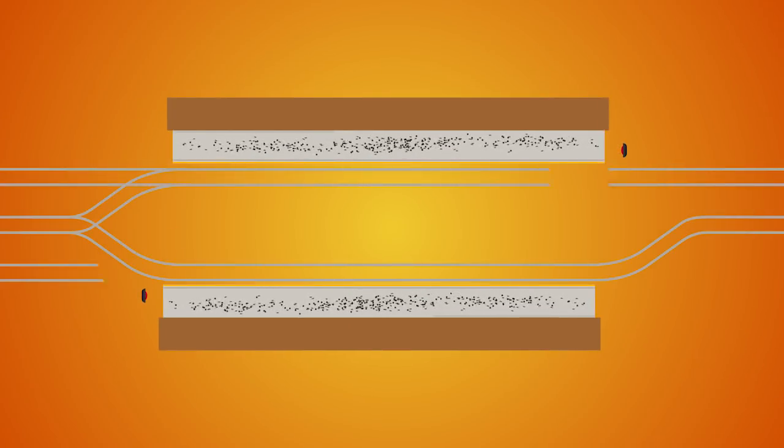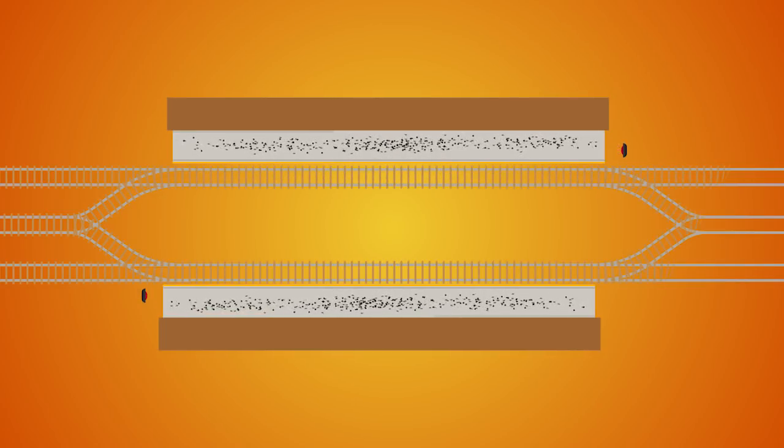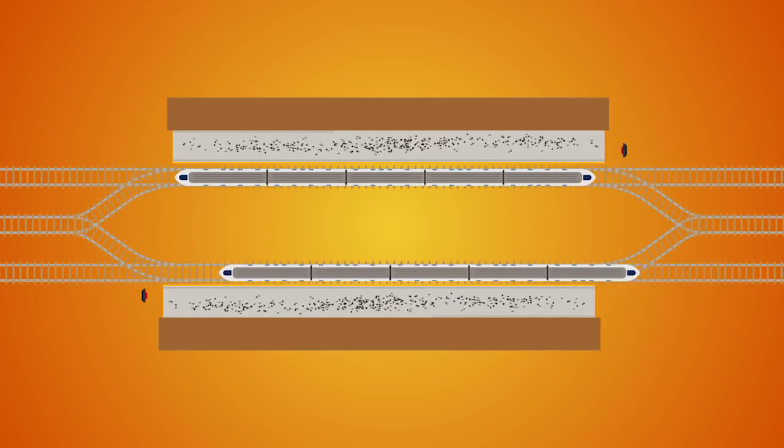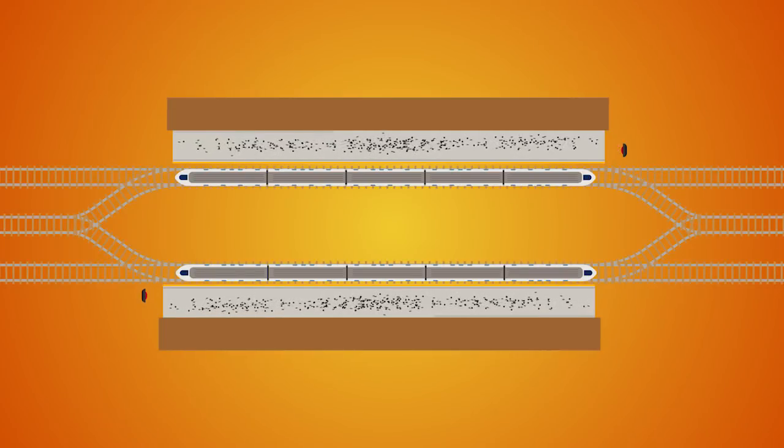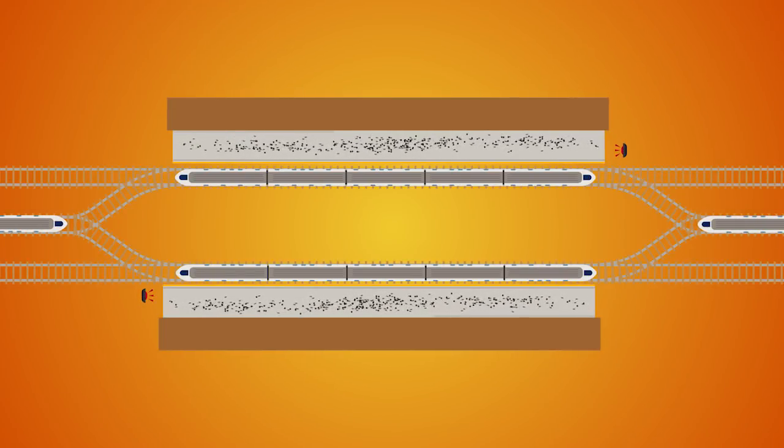When a train misses its allocated time at a station by a few minutes, this minor delay can ripple along the network throughout the day, causing knock-on delays hundreds of miles away several hours later.